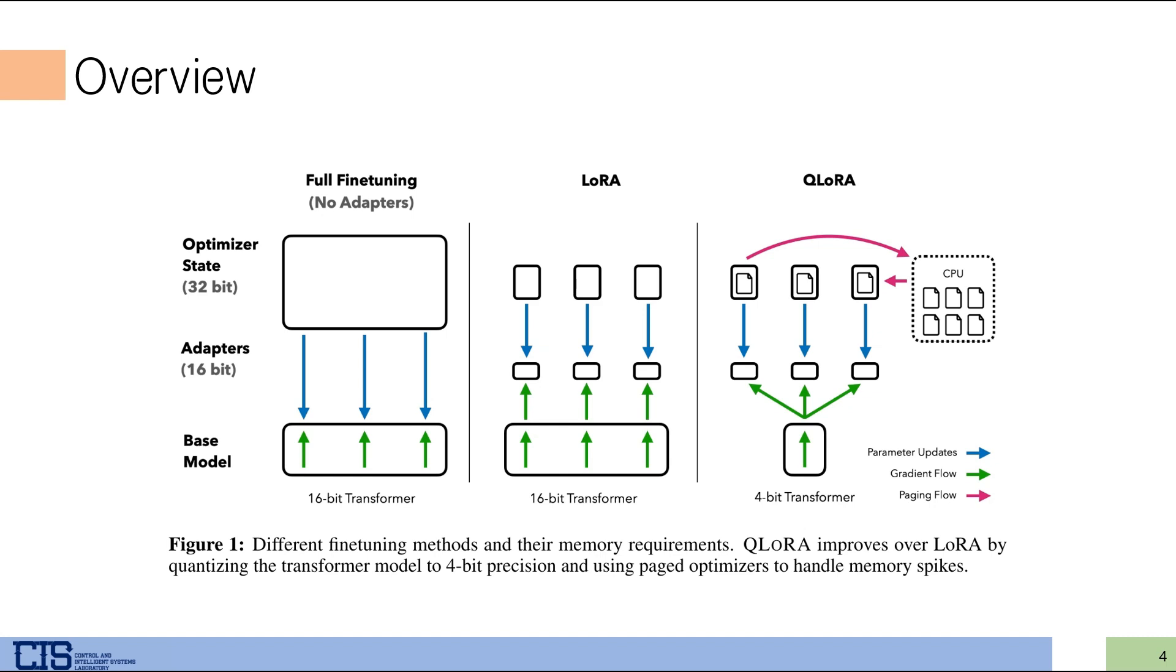In the case of LoRA, rather than fine-tuning all parameters, a small neural network called the adapter is attached to the pre-trained model and fine-tuned through this. Since fine-tuning is done through an adapter rather than all parameters, the time required is significantly reduced. Lastly, QLoRA performs LoRA by using 4-bit transformers instead of 16-bit transformers.